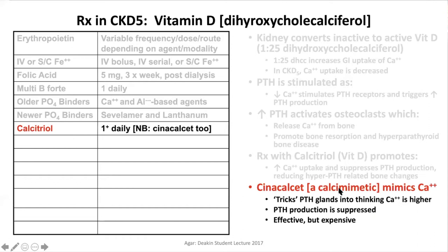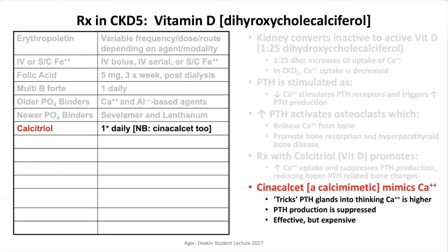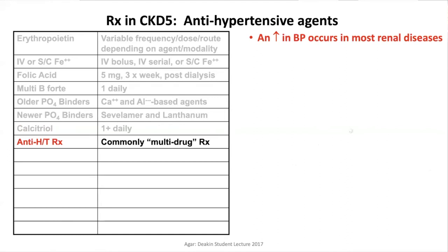Recently, cinacalcet — a calcimimetic — has emerged as another tool. It fools the parathyroid glands into thinking the calcium level is higher than it really is, thereby suppressing PTH. Cinacalcet is another bullet in the gun to manage patients with parathyroid disease. It is, however, expensive despite being effective.